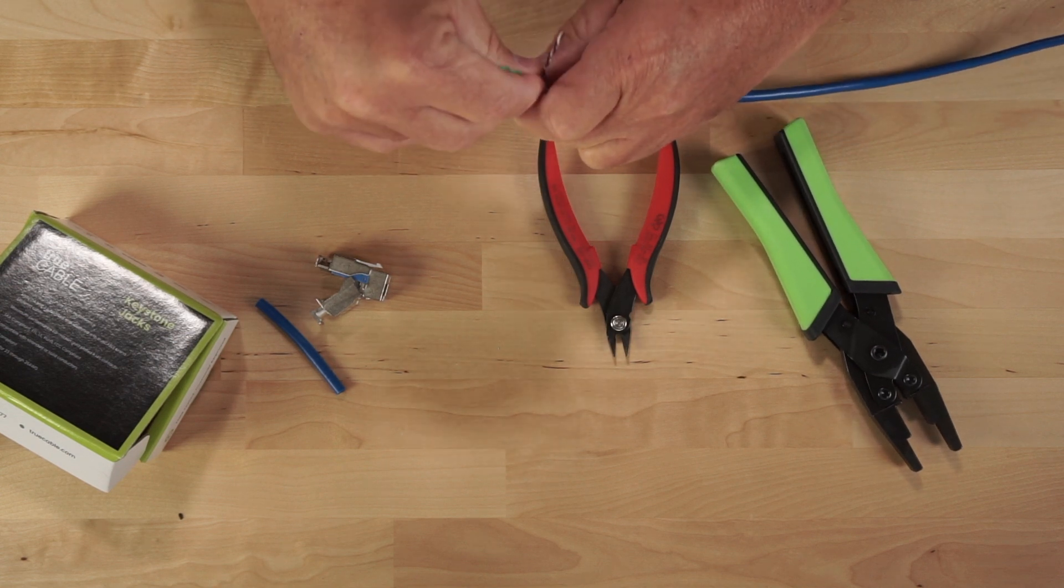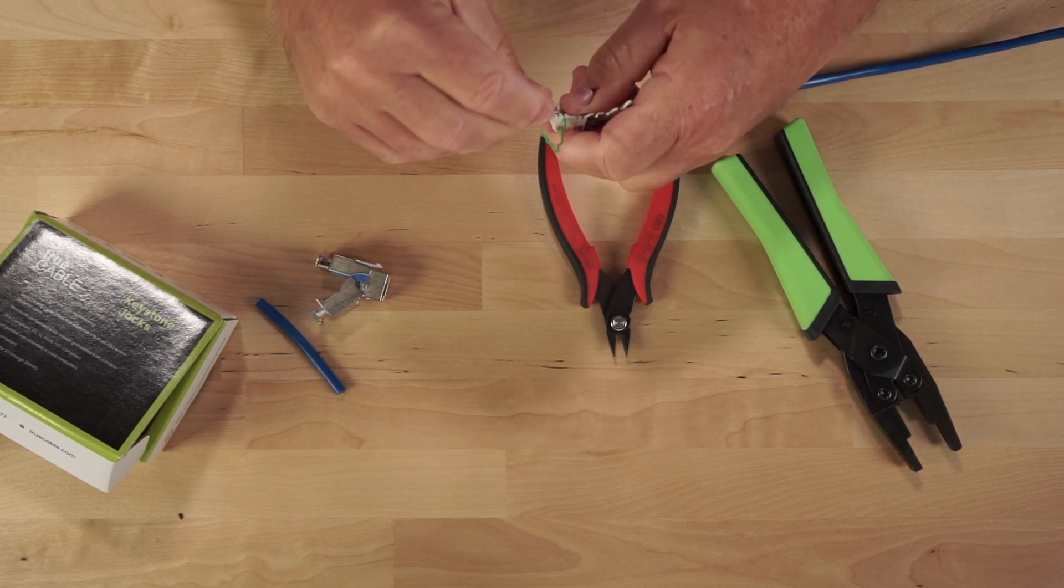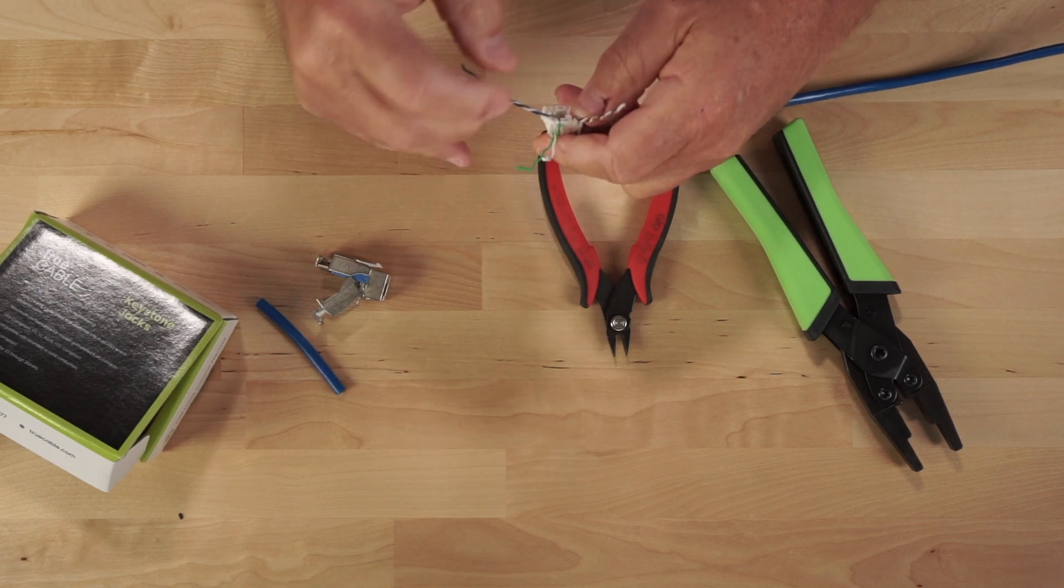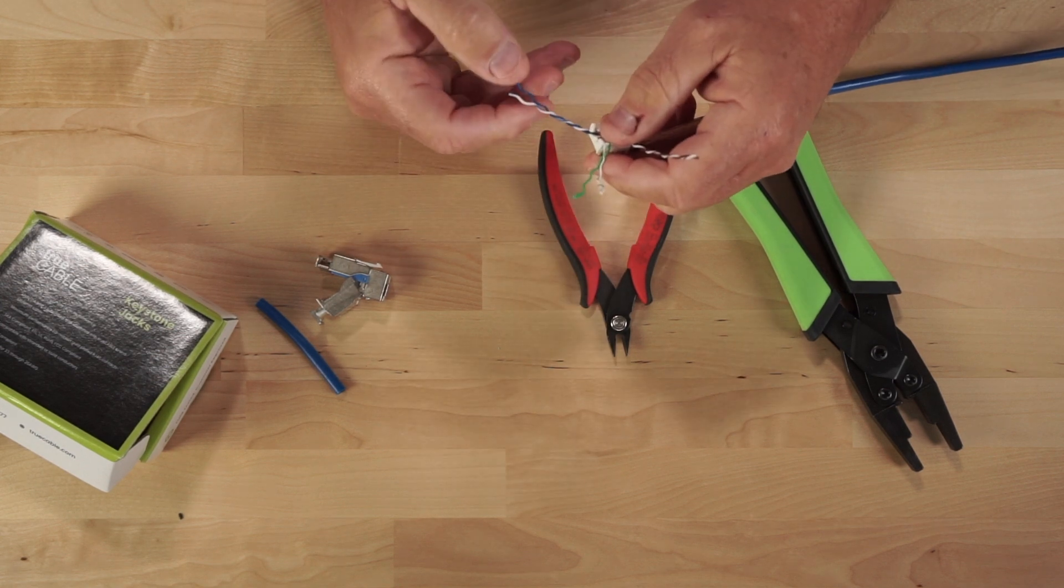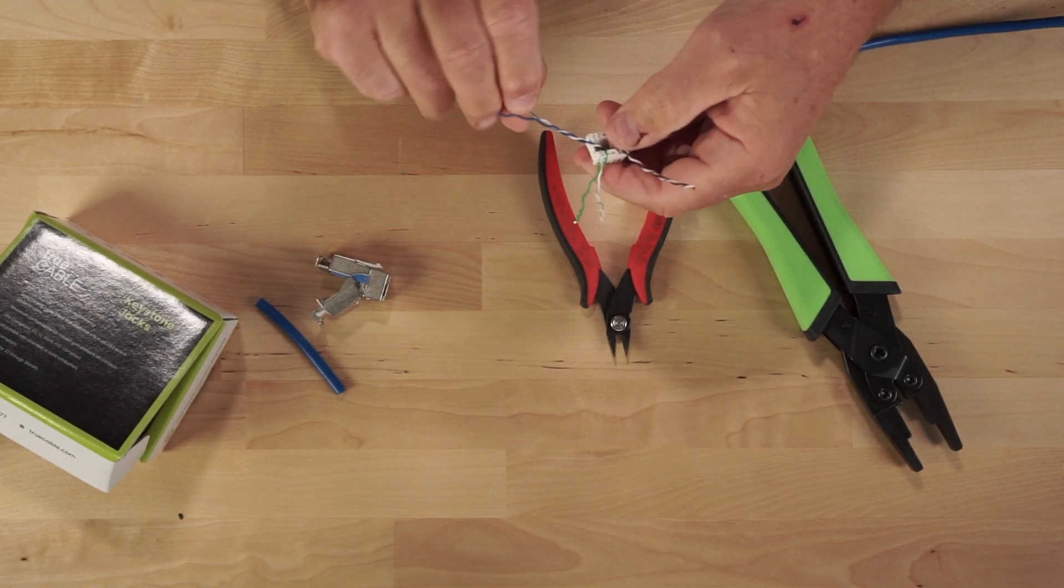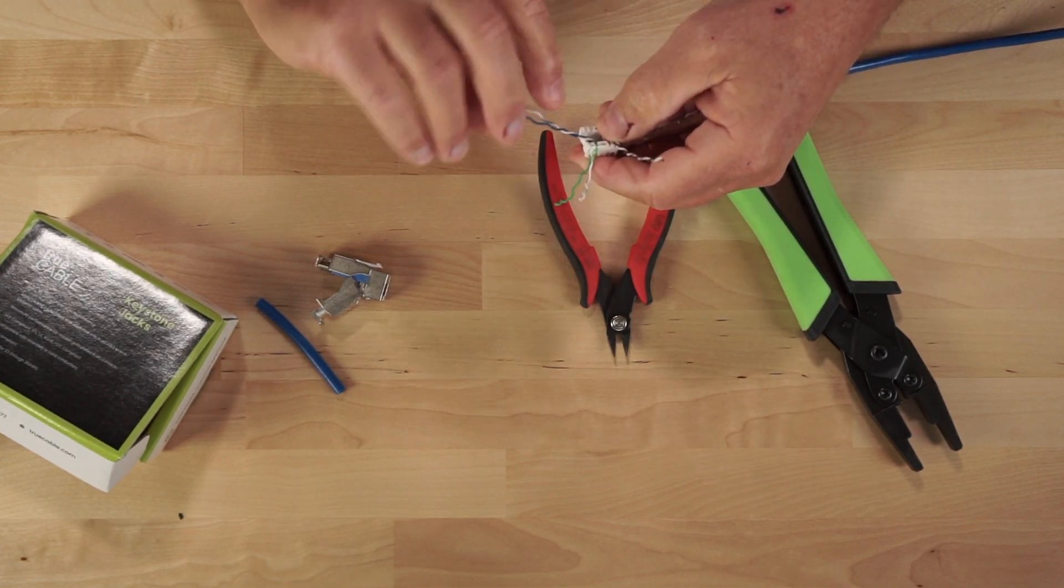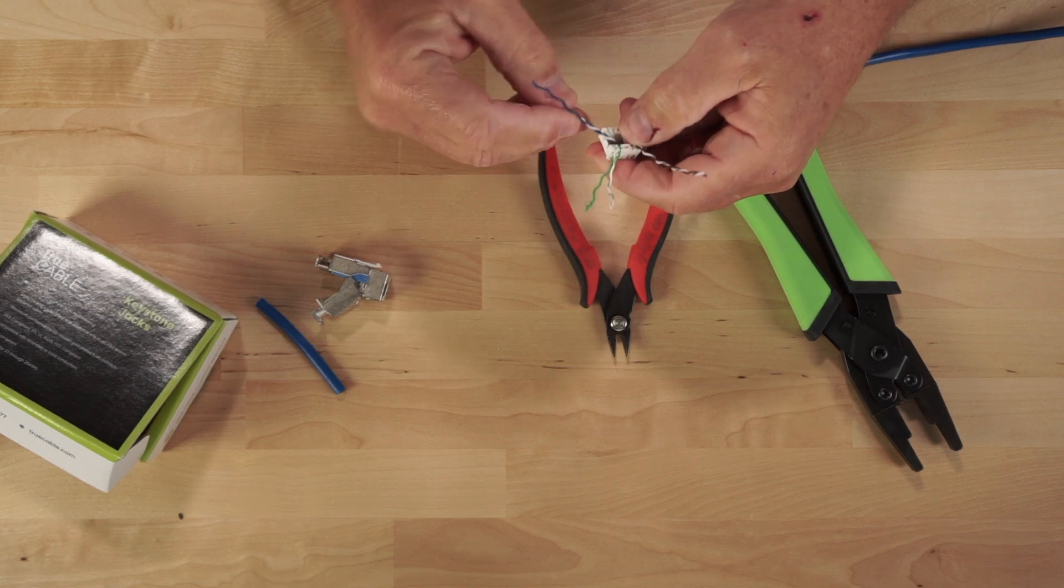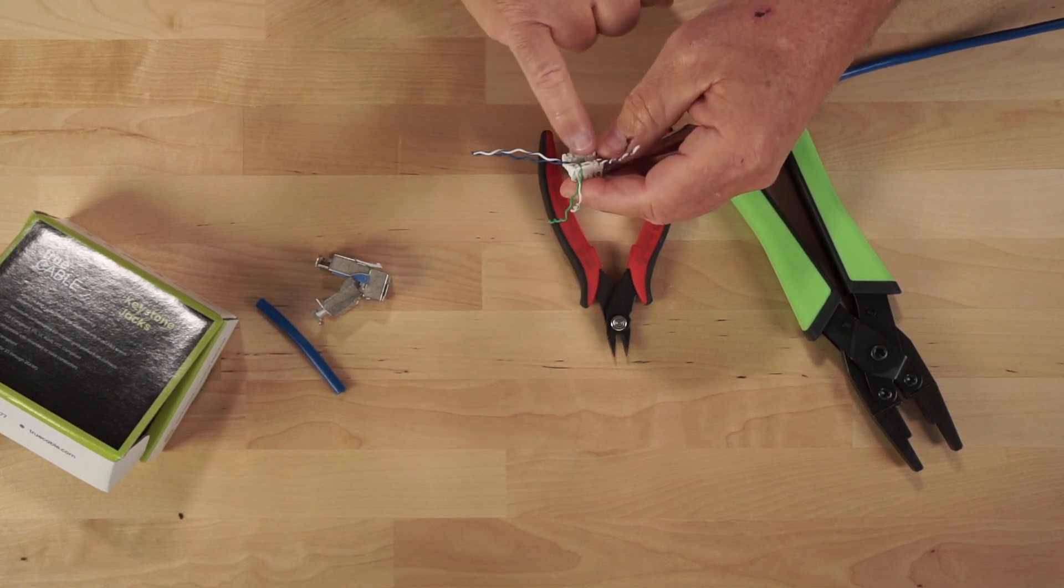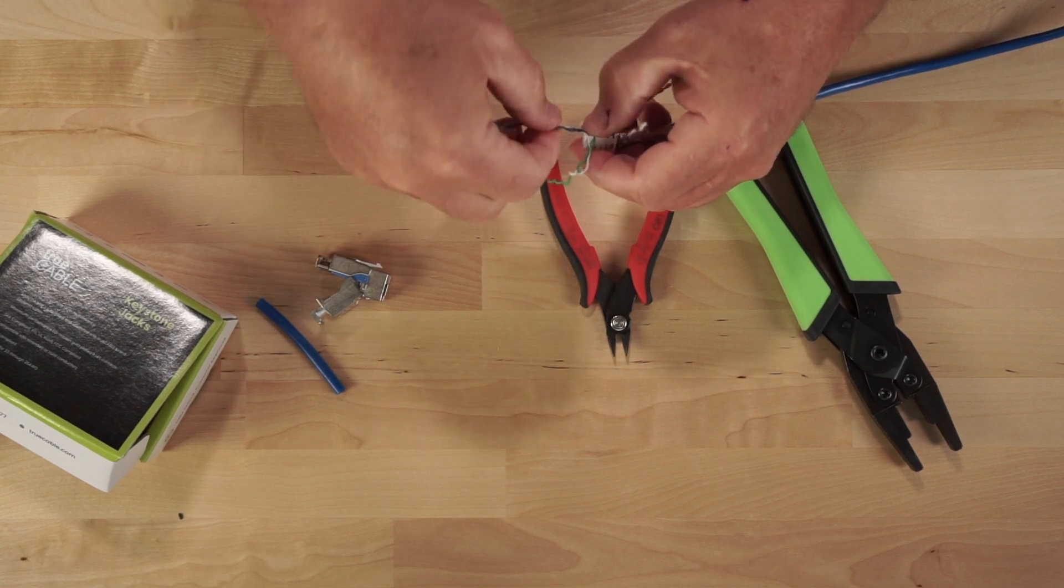So we're going to go green, pull in, white green, pull in. And I still got a good twist there. Now it's a little easier once you have some of the cables already pulled in. We're going to get the blue untwisted. Again, we want to leave at least a half inch twisted if at all possible.